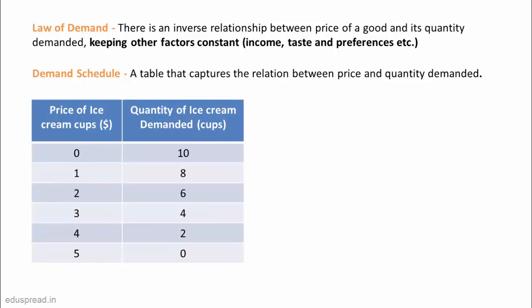This table shows the number of ice cream cups that you consume each month at different prices of ice cream. So if ice cream is free, you consume 10 cups per month. If the price increases to $1, you consume 8 cups per month. And as the price rises further, your consumption of ice cream keeps on decreasing. And when the price of a cup reaches $5, you stop consuming ice cream. This table here relating the price and quantity demanded is called demand schedule.